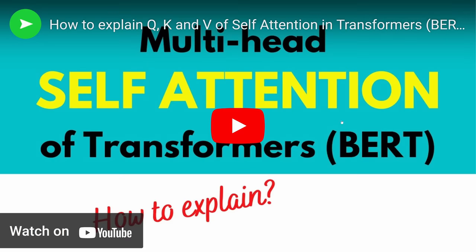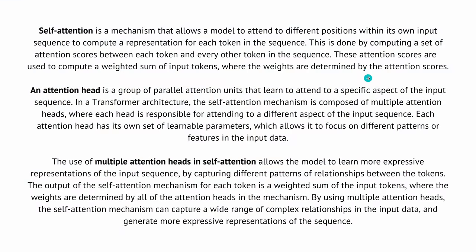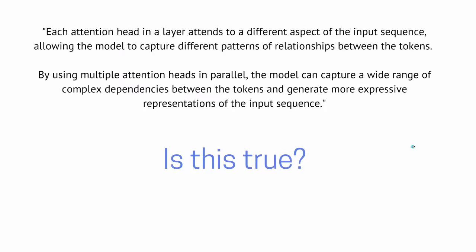If you want a deep dive into the multi-head self-attention mechanism of a transformer network, this is the video for you. In just a few seconds: self-attention means each attention head in a layer attends to different aspects of the input sequence, allowing our LLM or ChatGPT or GPT-4 to capture different parts of relationships between tokens. A token can be a piece of a word or a pixel in an image. By using multiple attention heads in parallel, the model can capture a wide range of complex dependencies between tokens and generate more expressive representations.